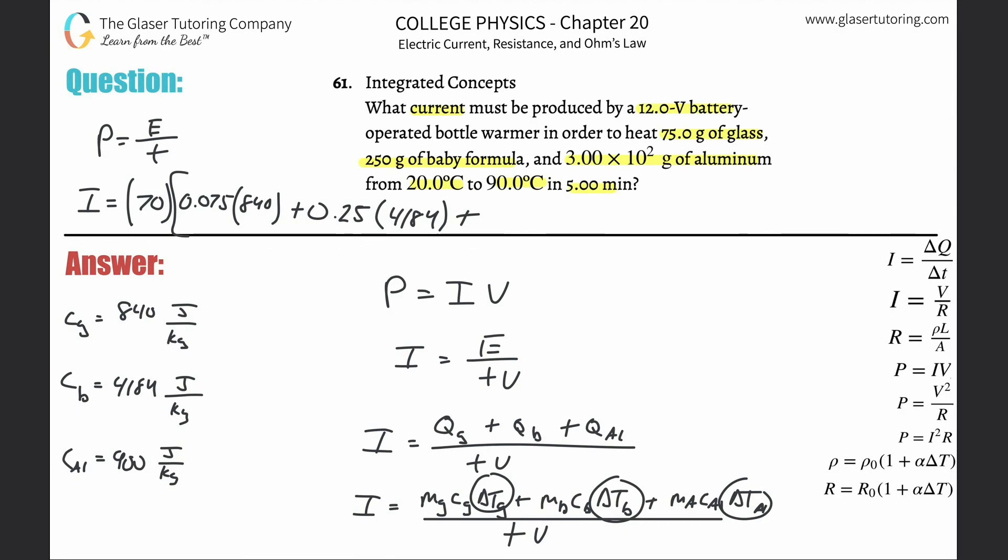Now we're going to do the mass of the aluminum, which is 3 times 10 to the 2. That's basically 300 grams, but we need that in kilograms, so it's going to be 0.3. Multiply that by 900, which is the specific heat. Finally, divide by the time - this is in minutes and we need it in seconds, so that's going to be 5 multiplied by 60, which is 300 seconds. Then multiply by the voltage, 12 volts.